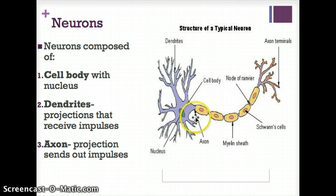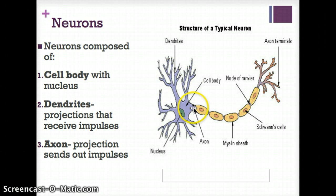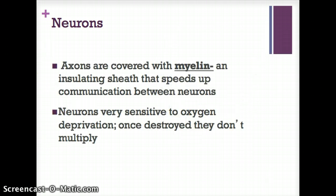Here's a picture of a neuron. A neuron is composed of a cell body with a nucleus at the very middle. The dendrites are projections that receive impulses. The axon is the projection that sends out impulses. Axons are covered with myelin, an insulating sheath that speeds up communication between neurons. Information is transferred very quickly because of this myelin sheath protection.